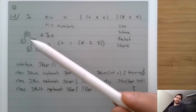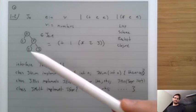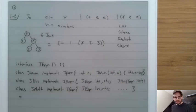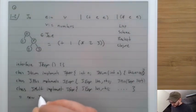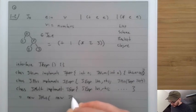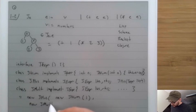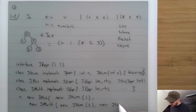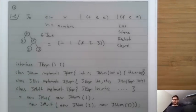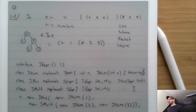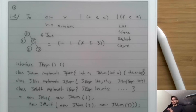We can take the program (plus 1 (times 2 3)) and write it in Java as: new JPlus(new JNum(1), new JMult(new JNum(2), new JNum(3))). We say that Java is the meta language and J0 is the object language.